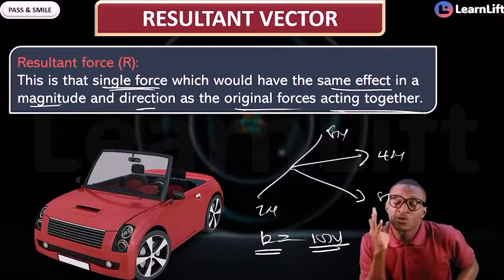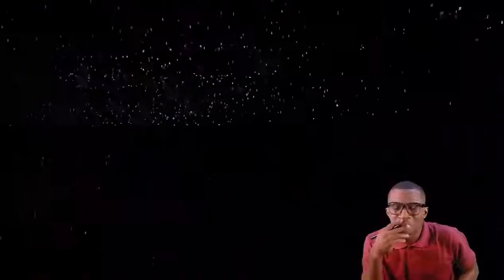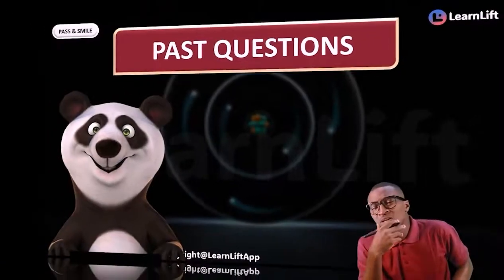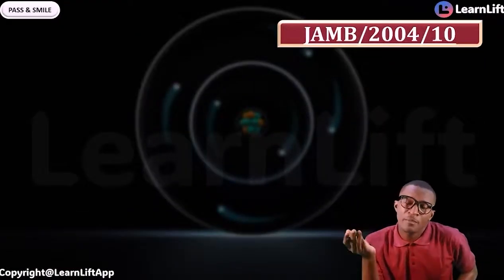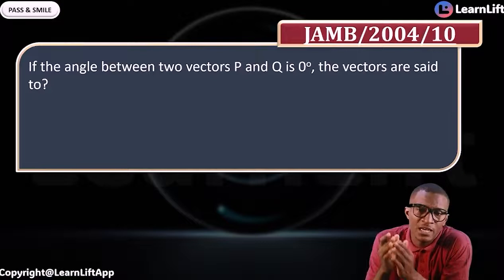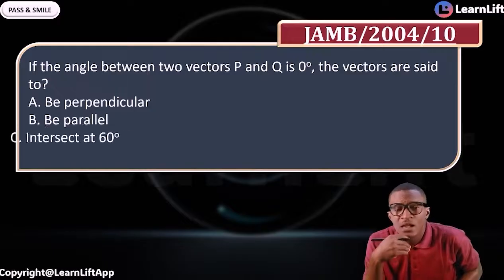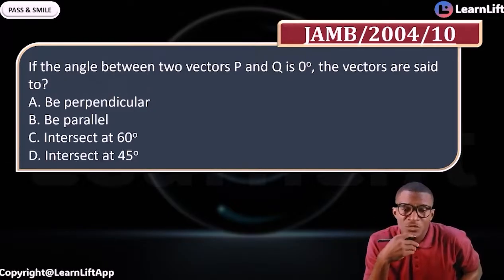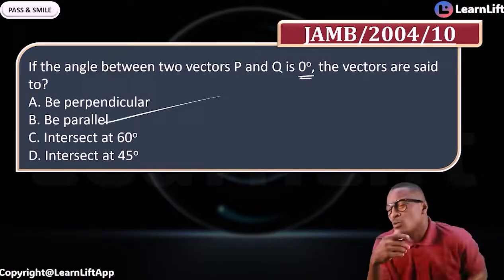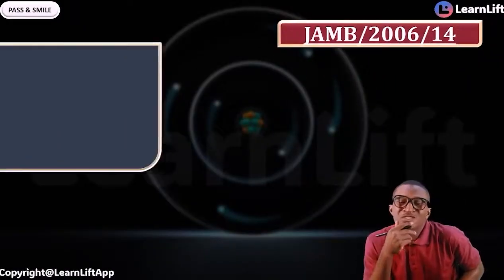In this class, we focused on the resolution of parallel vectors. Now let's look at past questions. JAM 2004 question 10: 'If the angle between two vectors P and Q is zero degrees, those vectors are said to be?' Option A: perpendicular, B: parallel, C: intercept at 90°, D: intercept at 45°. The answer is B — parallel — because when the angle is zero degrees, the vectors are parallel.